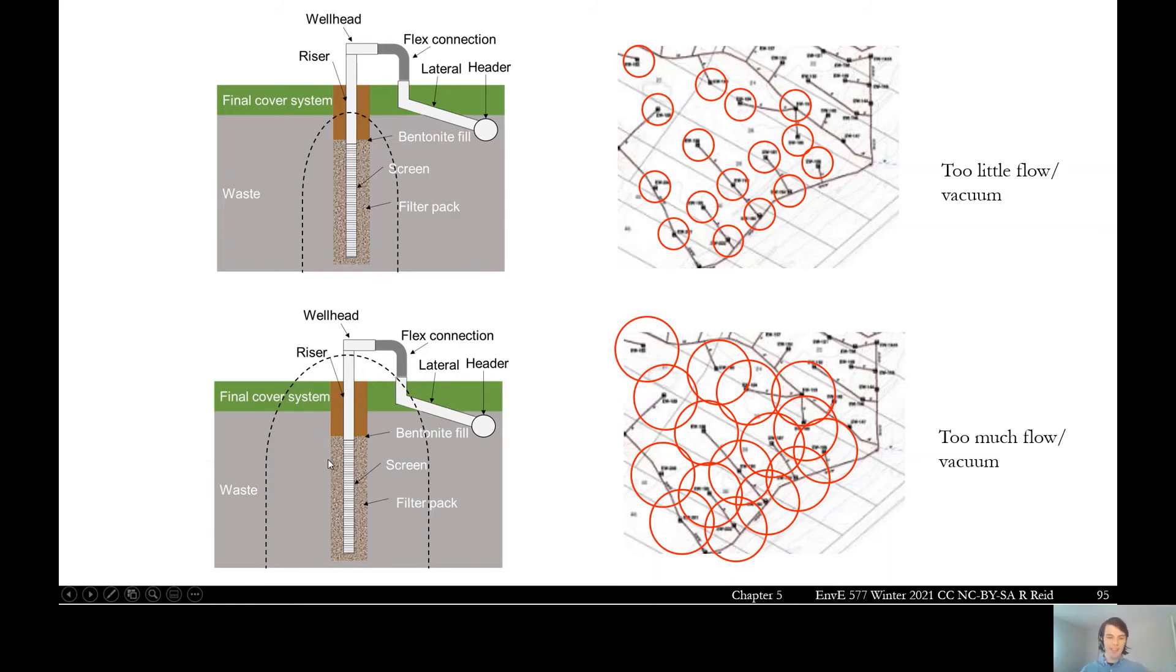Down below, I've expanded it. So you can see my sphere of influence has actually broken through the surface, which we know is not good. We don't want to be pulling out too much air from the top. And then in the figure down below, I've got some major overlapping between my spheres. So these guys are going to be fighting each other for the gas.